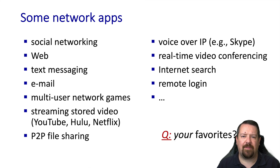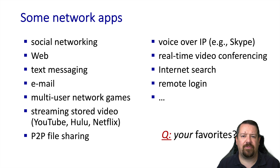We're all familiar with many network applications, and one important thing to keep in mind as we go forward is that different applications have different service requirements from the network. While they all need connectivity, web may be functional with a level of network service that isn't suitable for voice over IP, and likewise voice over IP may work with a level of service that's not suitable for streaming video. Understanding these requirements will help us as we look at the lower layers of the network.